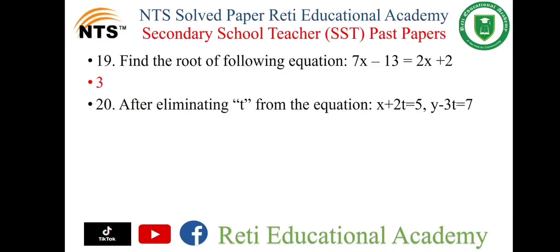Question number 20: After eliminating t from the equations x plus 2t equals 5 and y minus 3t equals 7, the result will be 3x plus 2y is equal to 29.